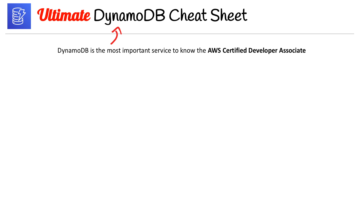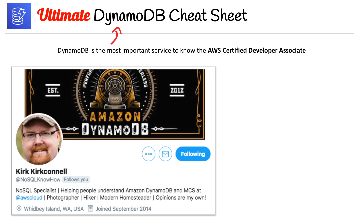This cheat sheet is very long — it's the longest one in this course. It's seven pages long and actually started out as only five pages. I had published a preview on Twitter, and Kirk, who is a senior technologist at AWS specifically for DynamoDB, noticed I made some mistakes and offered to review the entire cheat sheet for accuracy. He turned this five-page cheat sheet into a seven-page cheat sheet, and I even learned a lot of great things. We all benefit from Kirk's help here.